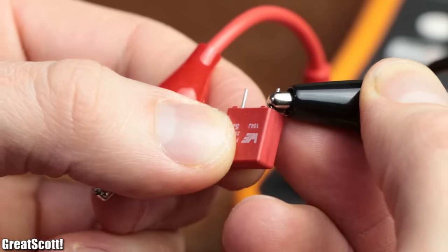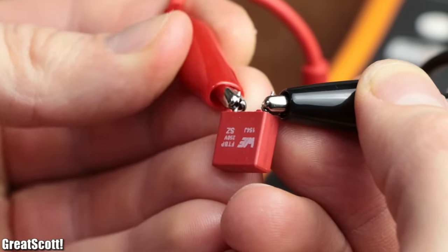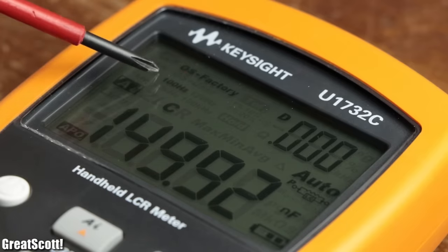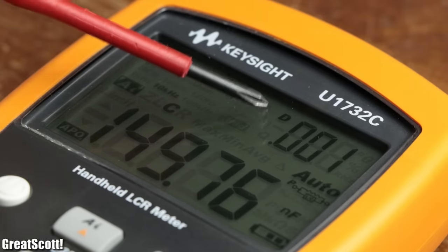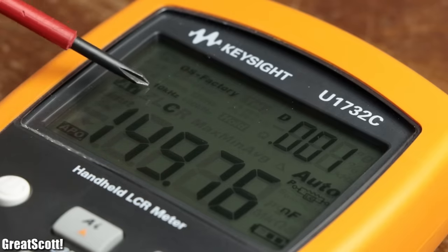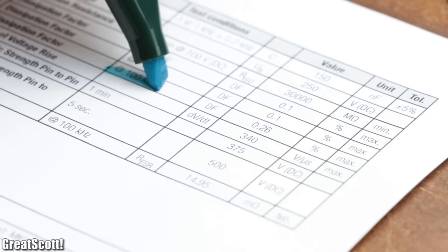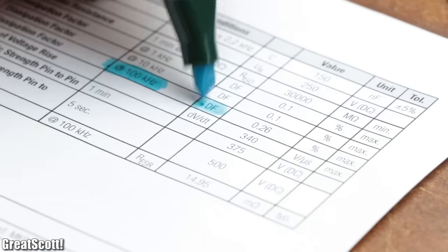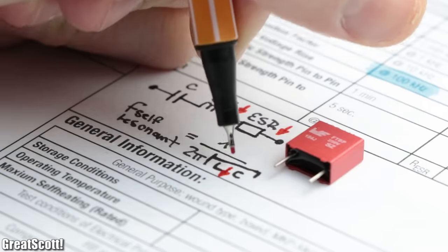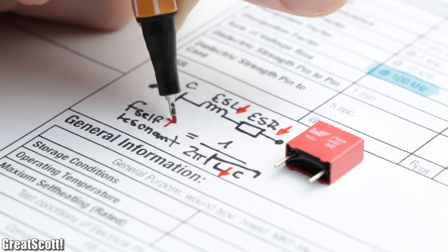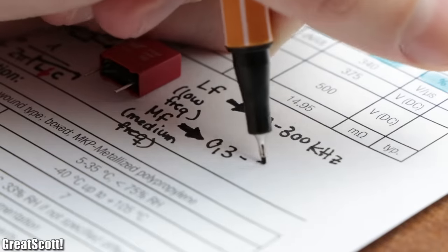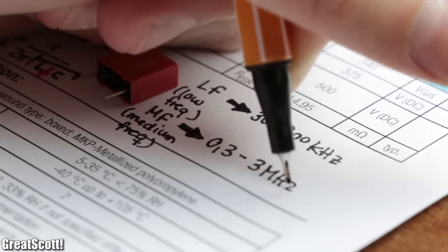But if we insert the 150 nF film capacitor into the LCR meter, we can see that its dissipation factor is pretty much 0 at 100 Hz and 1 kHz and only goes up to around 0.001, so 0.1% at 10 kHz. The datasheet of the capacitor pretty much confirms those values, by giving a DF of only 0.26% at 100 kHz, meaning such film capacitors have a very low ESL and ESR rating and thus a high self-resonant frequency, which makes them suitable for LF and MF applications, like our decoupling task.